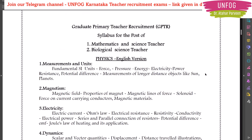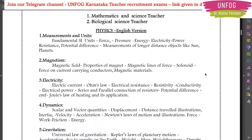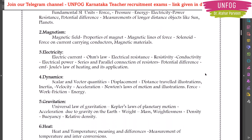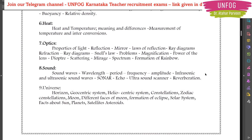This syllabus is for both mathematics and science teacher — that is PM method — and biological science teacher — that is CB method aspirants. Now, in the physics syllabus we have: measurements and units, magnetism, electricity, dynamics, gravitation, heat, optics, sound, and universe.